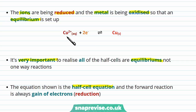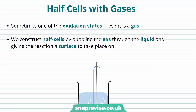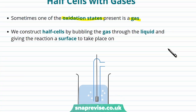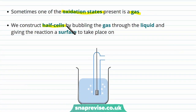It's very important that all of these half cells are equilibriums — we've got a flow in both directions. The equation is called the half cell equation, and it's convention to always have the forward direction, going from left to right, as the gain of electrons — the reduction of a species. It's not always as simple as having a metal electrode being oxidised into its ions in solution; sometimes one of the oxidation states present is a gas.